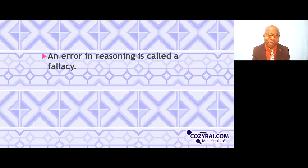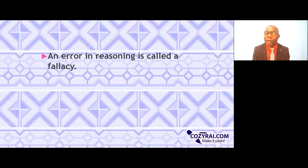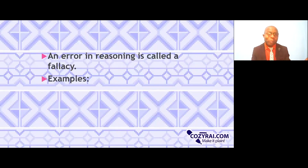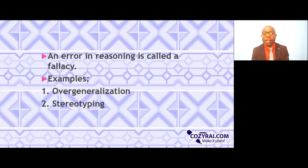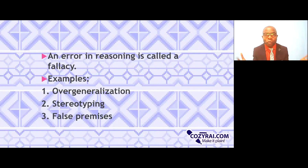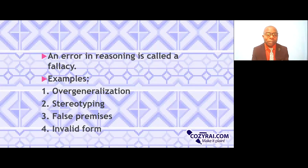We will make errors in reasoning, and the name for any such error is called a fallacy. So an error in reasoning is called a fallacy — you may hear people say 'that is fallacious,' meaning it's an error in reasoning. Examples of errors in reasoning include overgeneralization, which as we saw in previous videos is a very dangerous type of stereotyping, and stereotyping itself. We also have false premises — once the premises do not agree with each other, the conclusion will be faulty. And an invalid form can also contribute to an error in reasoning.